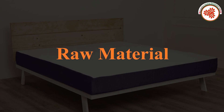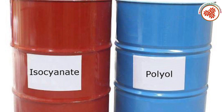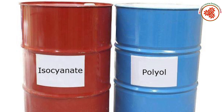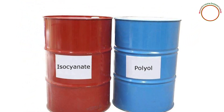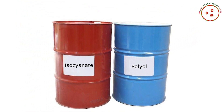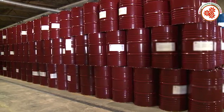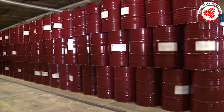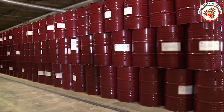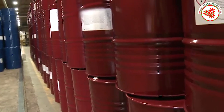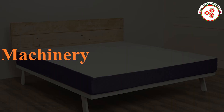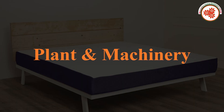Raw materials: polyurethane foam is made from two chemicals — isocyanate or MDI, and polyol. Some catalysts are also used. Pigments of different colors are also used.